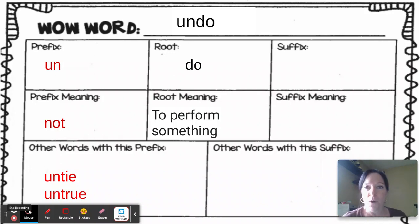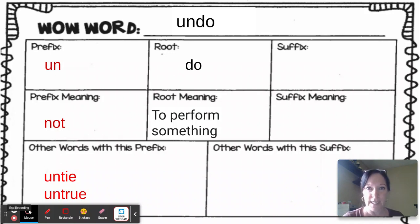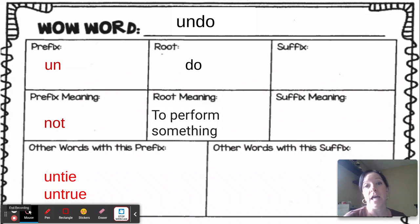So if we look at the prefix un in red here, you'll see that un means not. I used some examples of words that had the un prefix on them, like untie — so not tied — or untrue, not true.